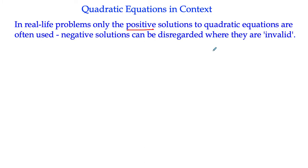Sometimes in a quadratic equation you can get a negative answer. In these kinds of situations, it becomes a purely theoretical exercise if they're negative. If you're talking about dimensions of a square or a rectangle, it can't be negative, and therefore the negative solutions are what we call invalid — in other words, they just don't make sense. So we ignore them.